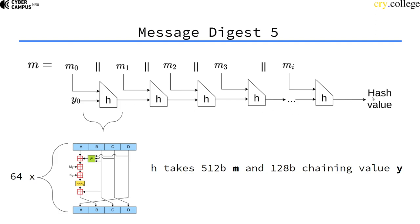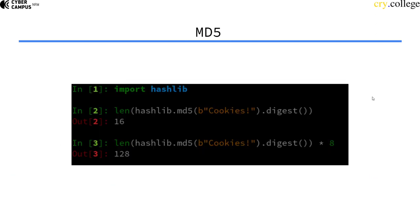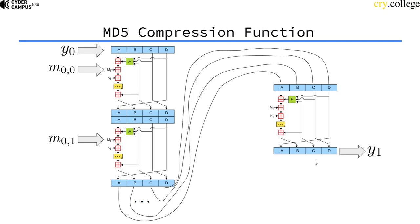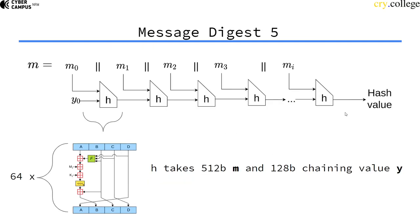The output is just the last chaining value, which is 128 bits or 16 bytes. That is this output here, or the last chaining value supplied to you.